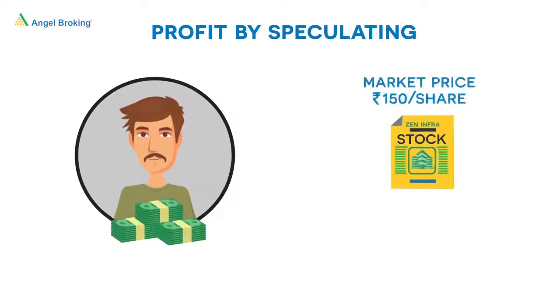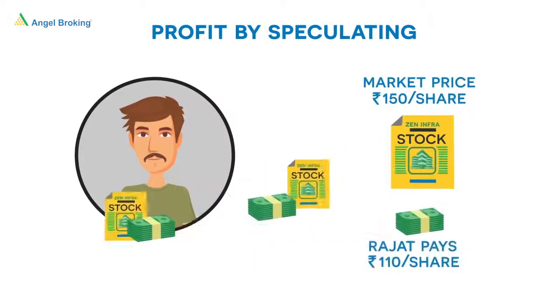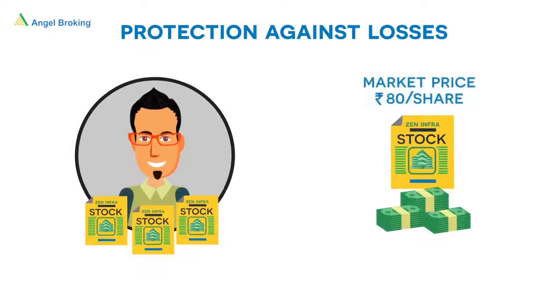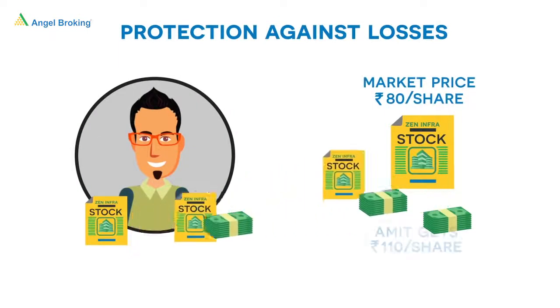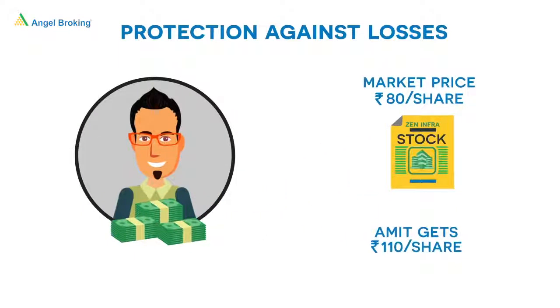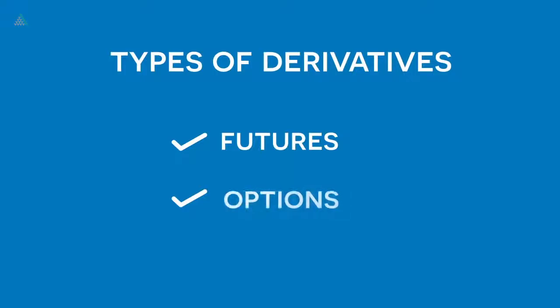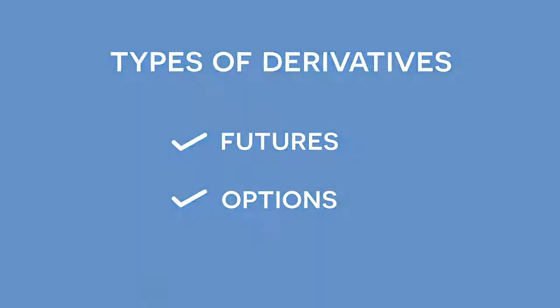It allows Rajat to make profit by speculating and provides Ahmed protection from incurring heavy losses. Futures and options are two common types of derivatives.